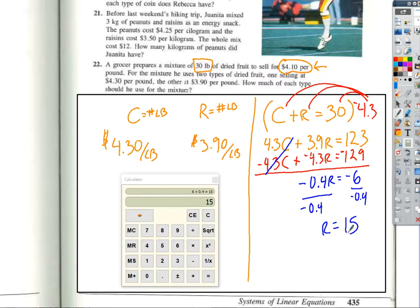All right. If I have 15 pounds of raisins and I have 30 total pounds of dried fruit, how many pounds of cherries do I have? 15. 15. All right. That is not so bad.